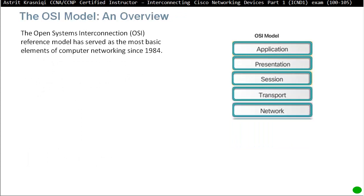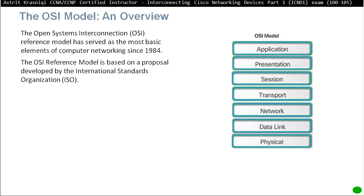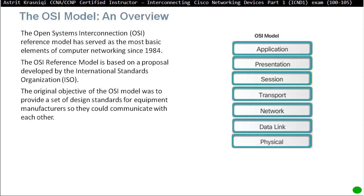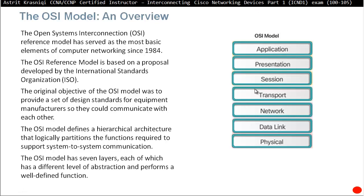Because TCP/IP wasn't as in-depth, they developed the OSI model, which is made up of seven layers. OSI stands for Open System Interconnection. The reference model has served as the most basic element of computer networking since 1984. The OSI reference model is based on proposals developed by the International Standards Organization, ISO. The original objective was to provide a set of design standards for equipment manufacturers so they could communicate with each other. The OSI model defines a hierarchical architecture that logically partitions the functions required to support system-to-system communications.